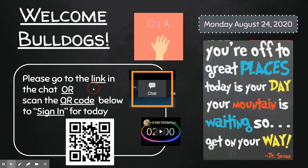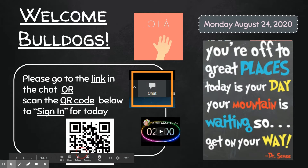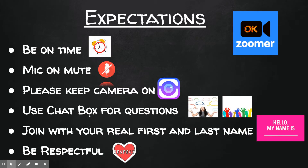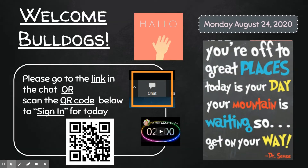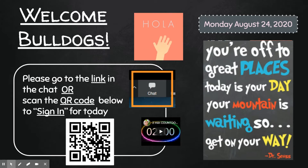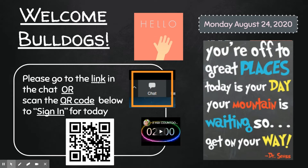If you have an Apple device, you may use your camera to scan the code. If you don't have an Apple device, you can download one of the many QR code readers available. If you don't want to download one, that's fine as well — the link to the form will be posted in the chat area of Zoom.